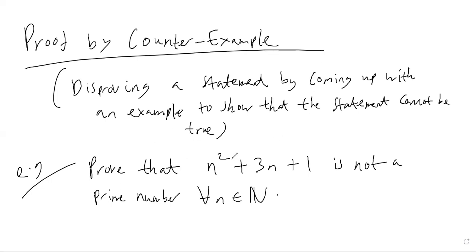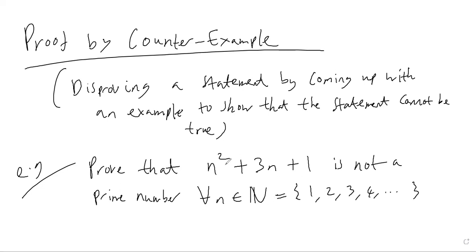So this example here: prove that n² + 3n + 1 is not a prime number for all natural numbers n. The natural numbers are just the counting numbers — 1, 2, 3, 4, and so on. Basically we want to prove that regardless of what positive integer value n is, this expression will not be prime for all of those values.